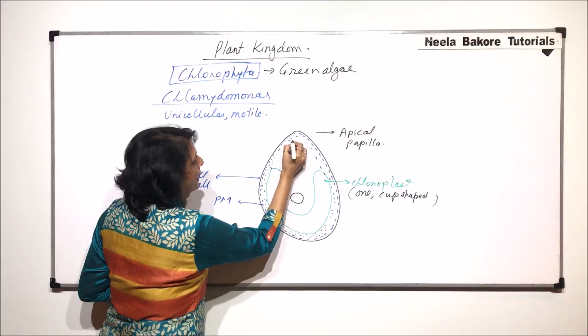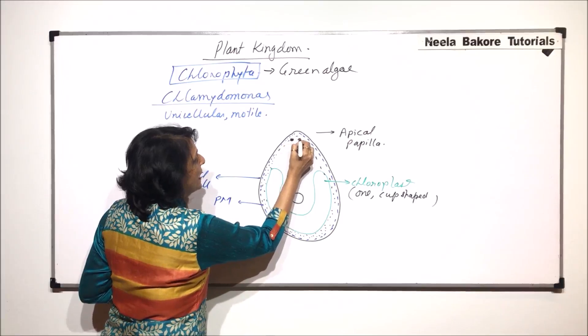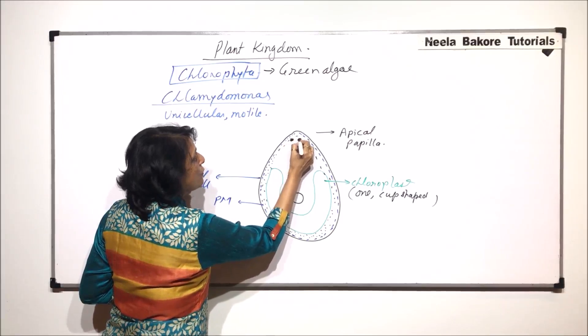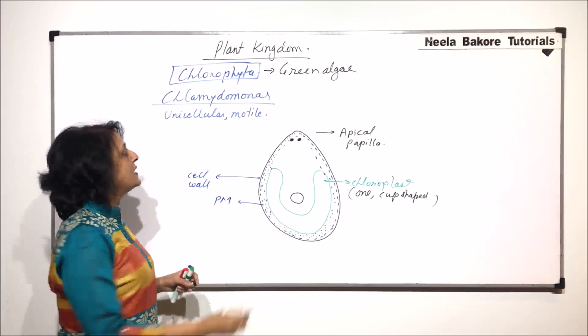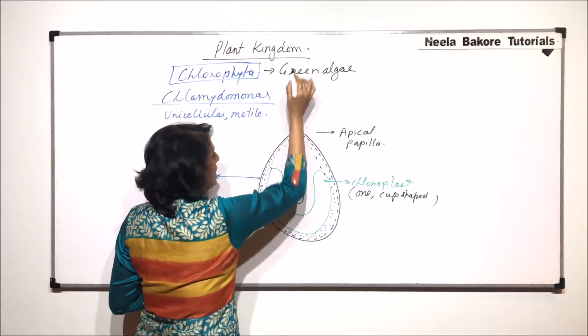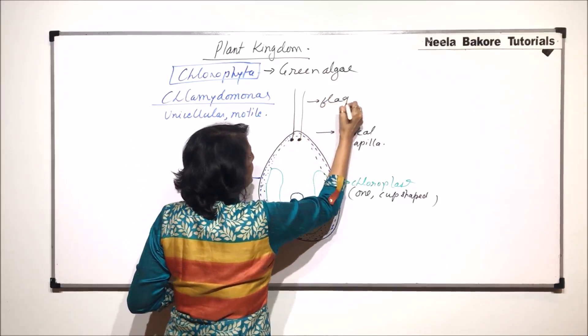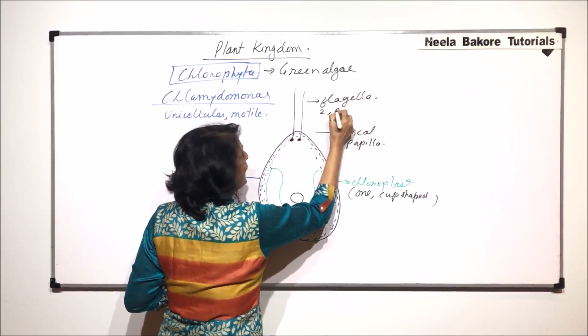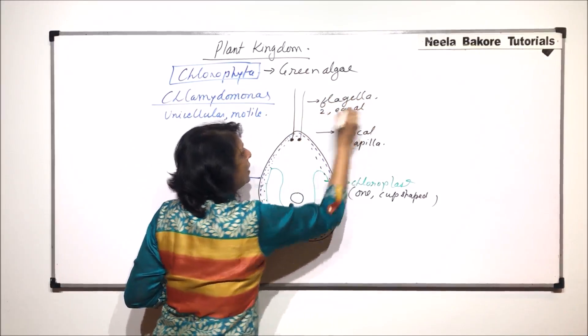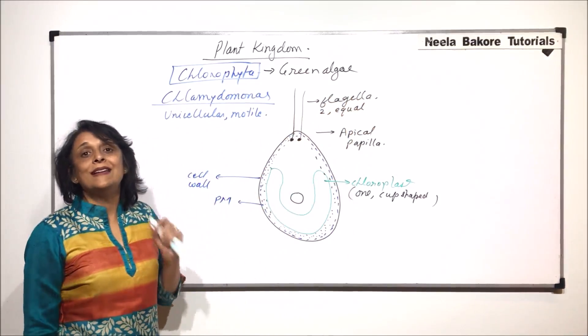Here we find that there are two basal granules from which the flagella arise. So there are two anteriorly placed flagella, and they are equal in size or length.